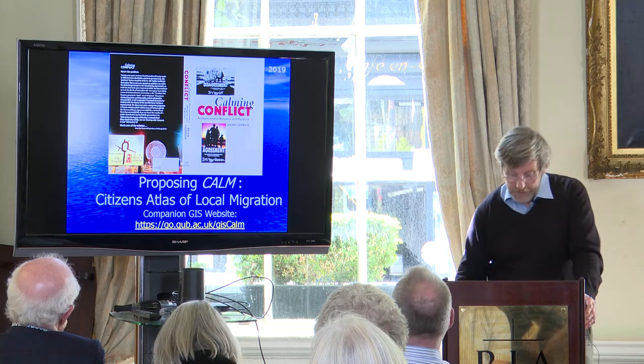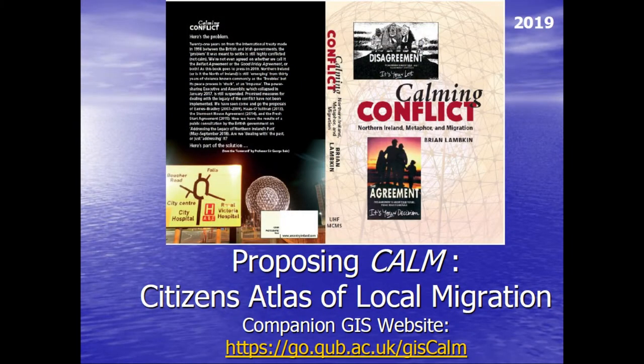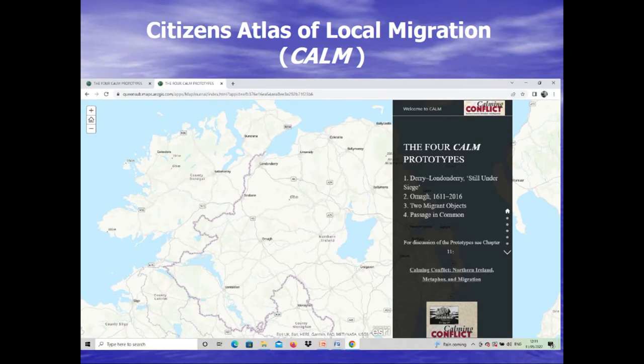This is like WC Fields — it's not sensible to work with animals, children, or websites in a live presentation. We'll try it at the end. But when you click on that link, you get taken to this home page: Citizens Atlas of Local Migration, CALM. There are four CALM prototypes to explore, discussed in the text. The first one is called Derry Londonderry, Still Under Siege.